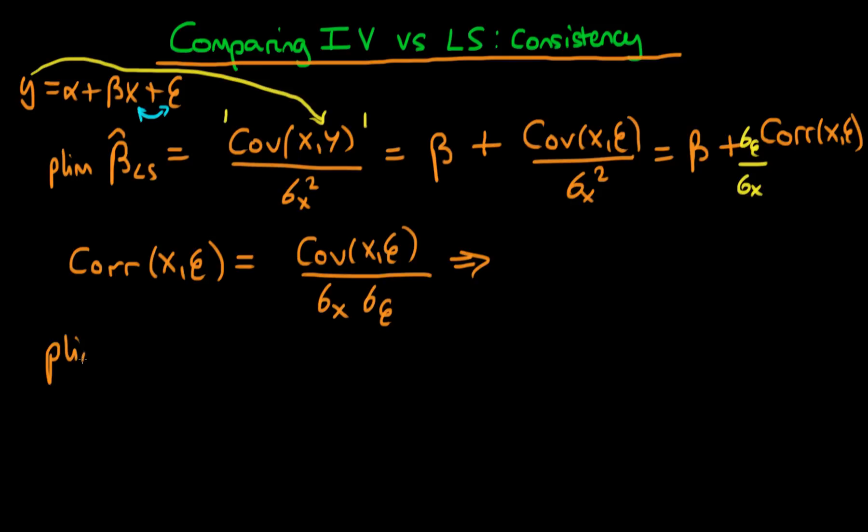What's the probability limit of beta hat IV? So beta hat IV the probability limit is just the covariance between z with y divided through by the covariance of z with x.